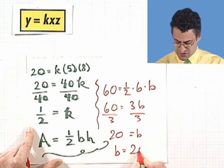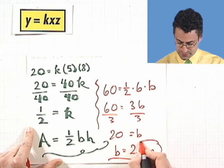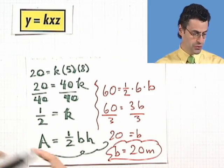So what are my units? The base is 20 meters. So you can see it's sort of cool that we can actually use this notion of joint variation to confirm the formula for a triangle. The constant, in that case, is 1 half.